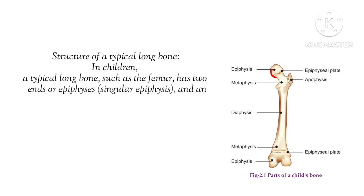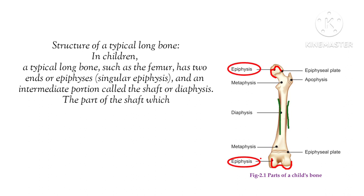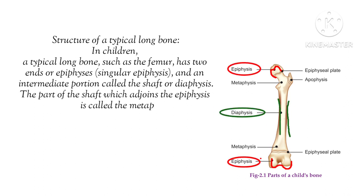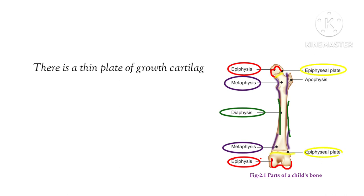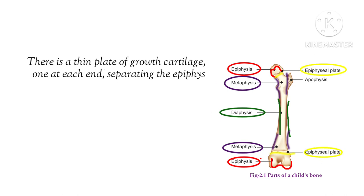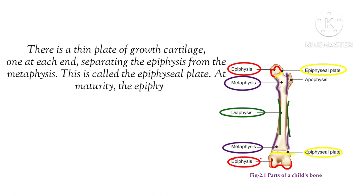The femur has two ends, which we call the epiphysis. The intermediate section — the large middle portion — is called the shaft or diaphysis. The portion joining the epiphysis and diaphysis is called the metaphysis. Between the epiphysis and metaphysis there is a thin cartilaginous structure called the epiphyseal plate, which is where your bone grows.